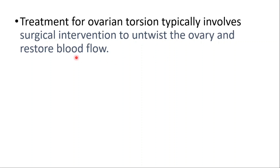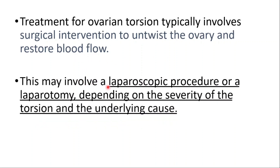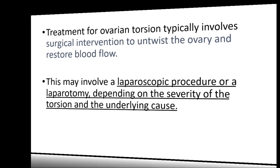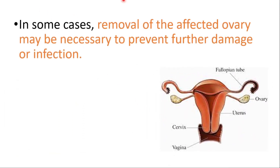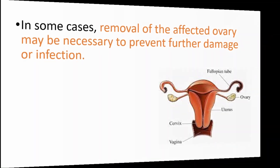Treatment for ovarian torsion typically involves surgical intervention to untwist the ovary and restore blood flow. This may involve a laparoscopic procedure or laparotomy depending on the severity of the torsion and the underlying cause. In some cases, removal of the affected ovary may be necessary to prevent further damage or infection.